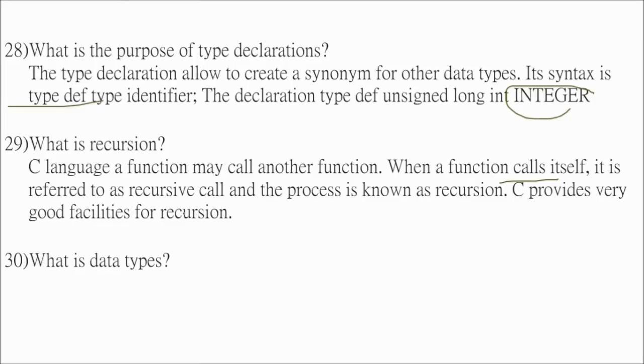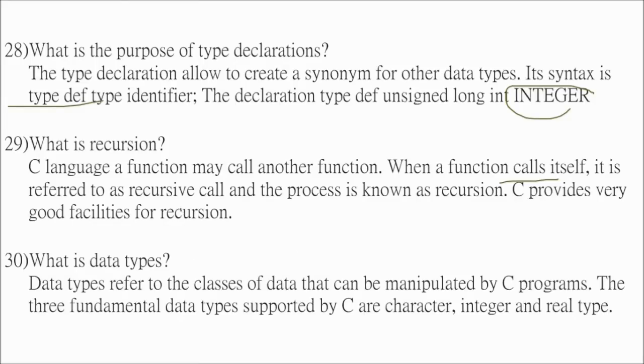So what is data types? This may be asked. Data types refers to the classes of data that can be manipulated by C programs. The three fundamental data types which is supported by C are character, integer and real.